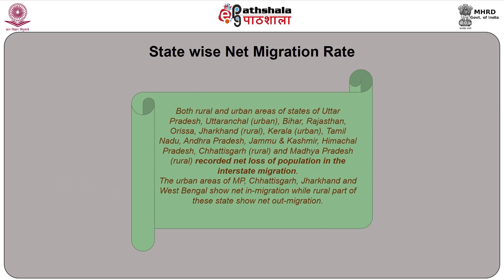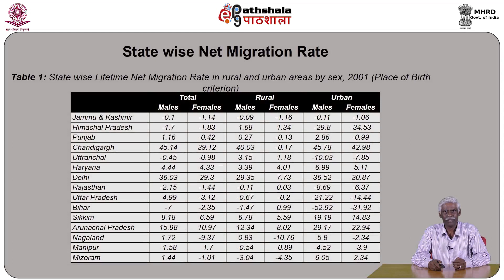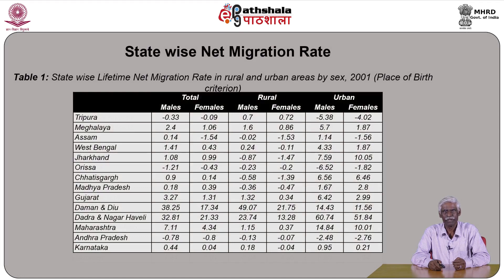The urban areas of Madhya Pradesh, Chattisgarh, Jharkhand, and West Bengal showed net in-migration while the rural parts of these states show net out-migration. The table clearly provides the huge variations that exist state-wide when we focus on lifetime net migration rate separately for rural and urban areas, and within each area by sex, based on the 2001 census using migration from place of birth as a criterion.